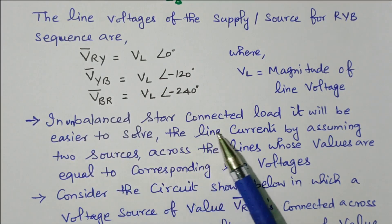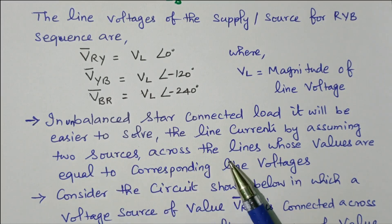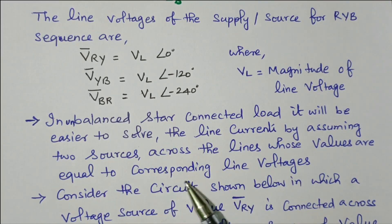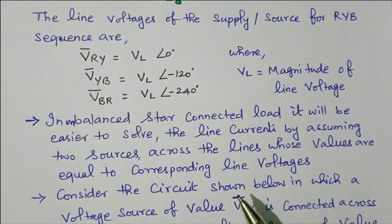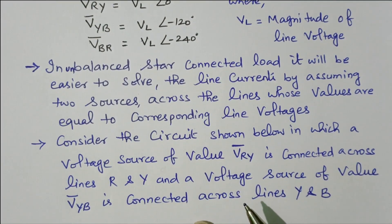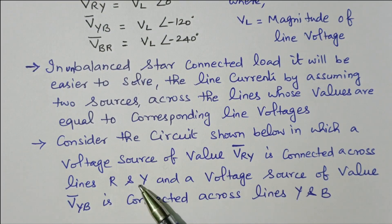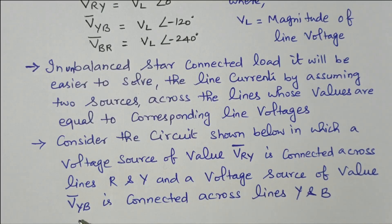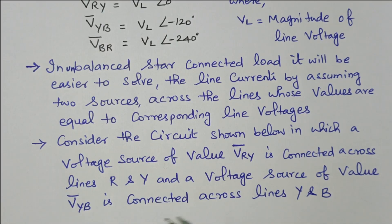In an unbalanced star connected load, it will be easier to solve the line currents by assuming two sources across the line whose values are equal to the corresponding line voltages. The line current is analysed using two corresponding line voltages. Consider the circuit in which voltage source VRY is connected across R and Y, and voltage source VYB is connected across Y and B. So we consider two things: VRY connected across RY, and VYB connected across Y and B. Now we will see the diagrams for further analysis.